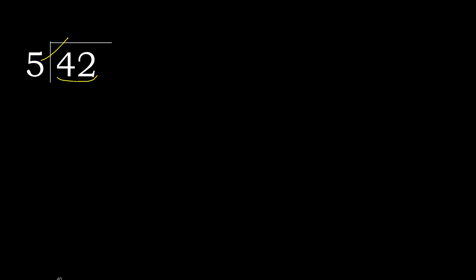5 multiplied by which number is nearest to 42 but not greater? 5 multiplied by 9 is 45 — 45 is greater. 5 multiplied by 8 is 40 — is not greater.